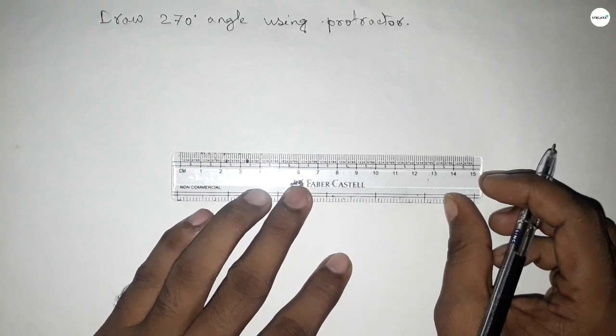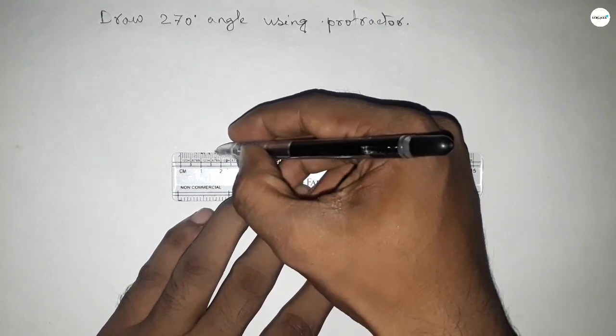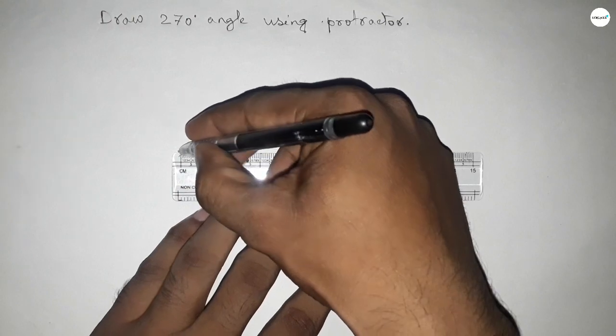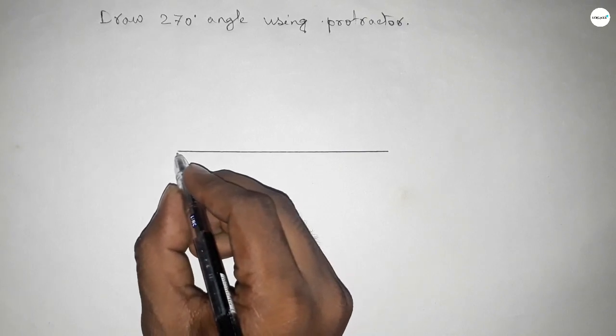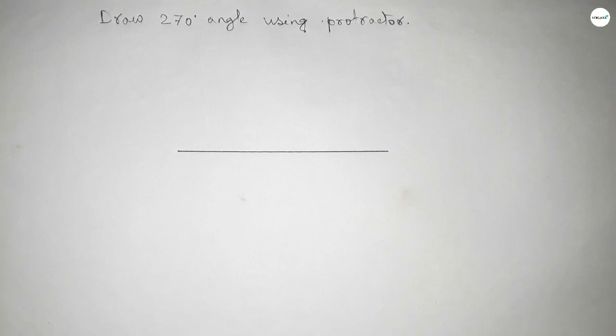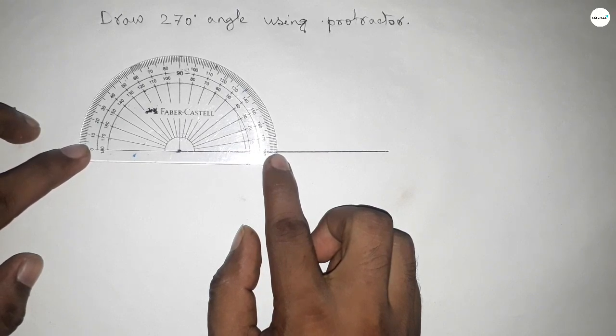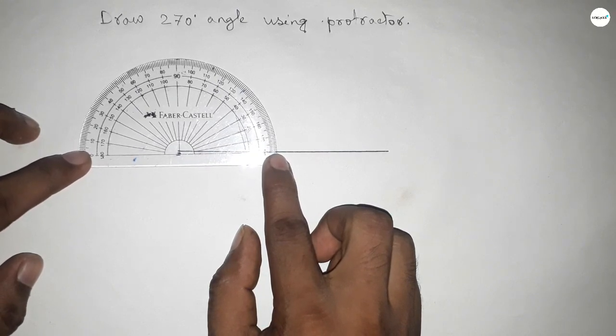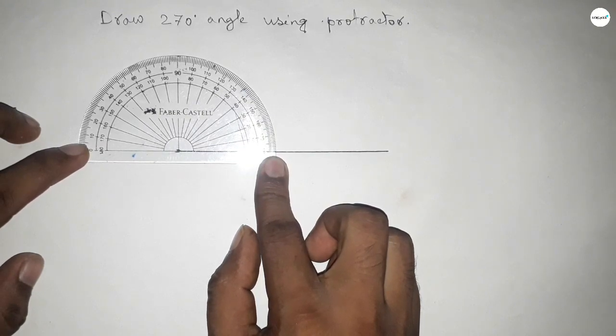First of all, draw a straight line of any length. Next, mark the point where we'll draw the 270-degree angle. Now put the protractor on the line perfectly and start counting the angle.